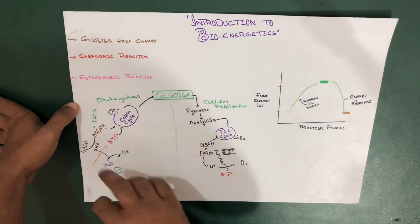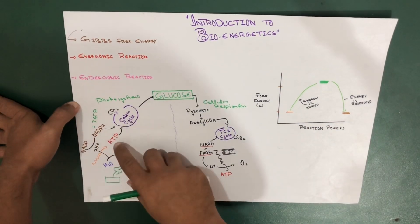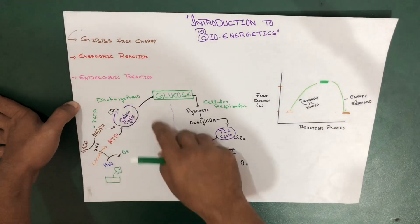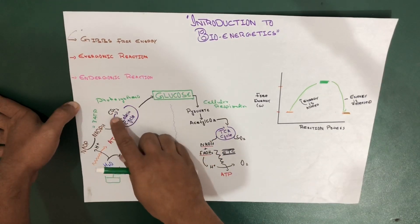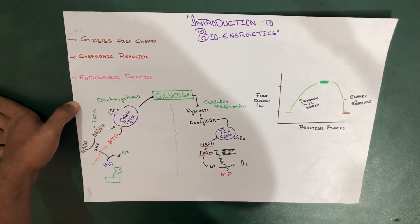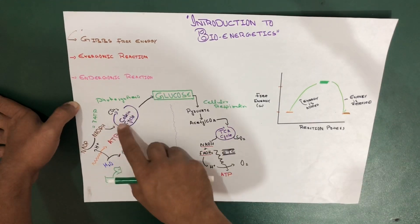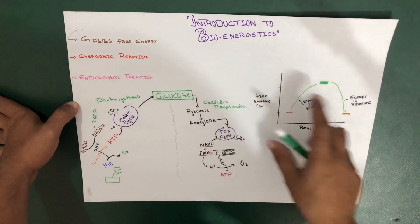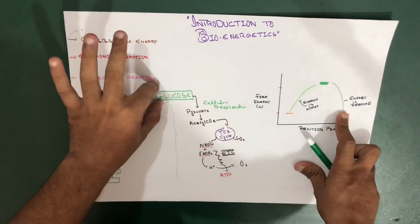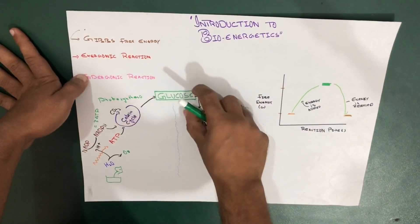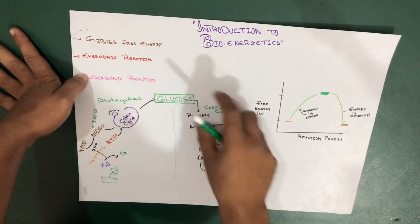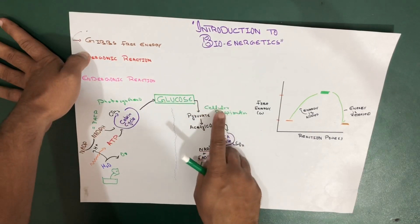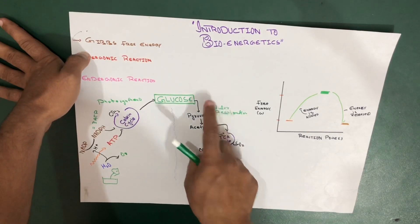The NADPH and ATP — both energy molecules — go through the Calvin cycle. In the Calvin cycle, we use carbon dioxide through carbon fixation. Both NADPH and ATP are used in the Calvin cycle, and finally we get glucose.